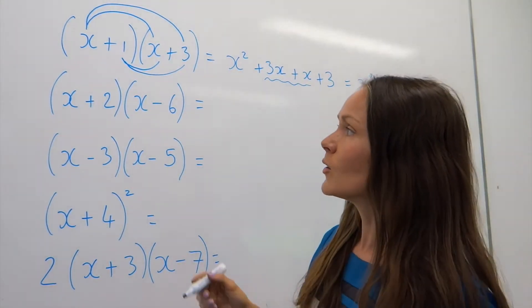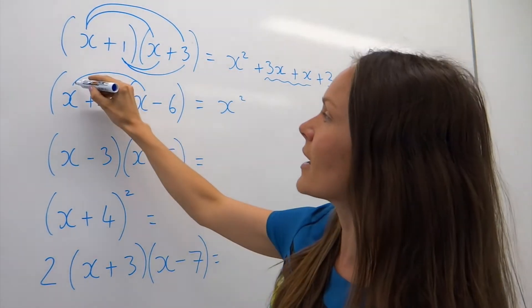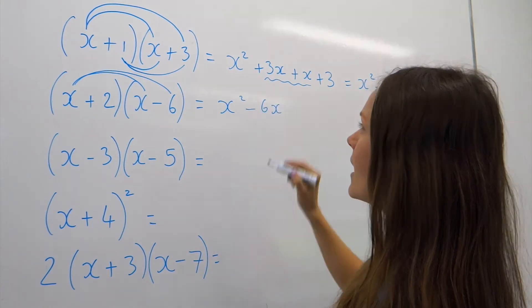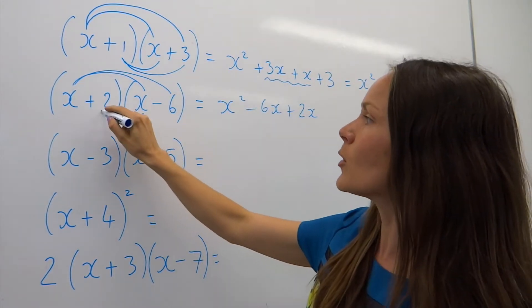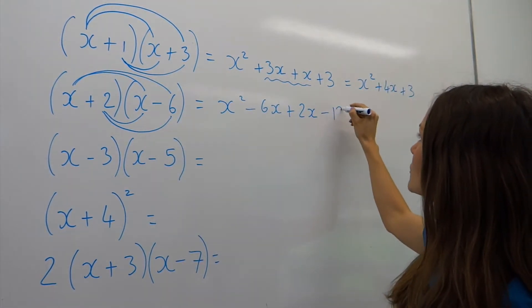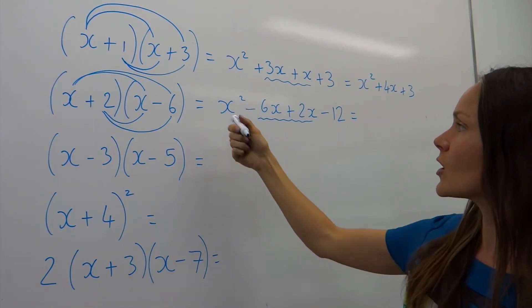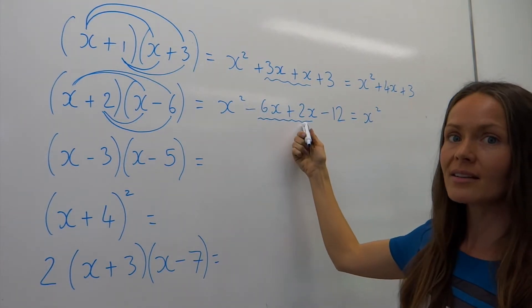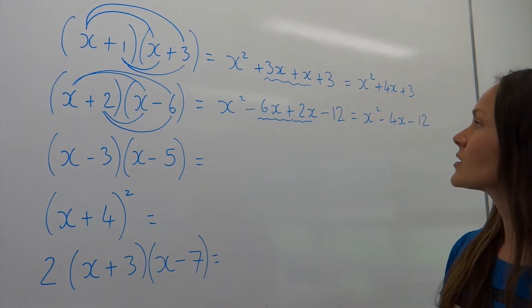For the second example, we multiply x by x to get x squared. Then we multiply this x by negative 6, which gives negative 6x. Now for the 2: 2 multiplied by x is 2x, and positive 2 multiplied by negative 6 — be careful, there's a sign change — gives negative 12. We simplify by adding the x terms: x squared stays the same, then negative 6x plus 2x gives negative 4x, and minus 12 stays the same.